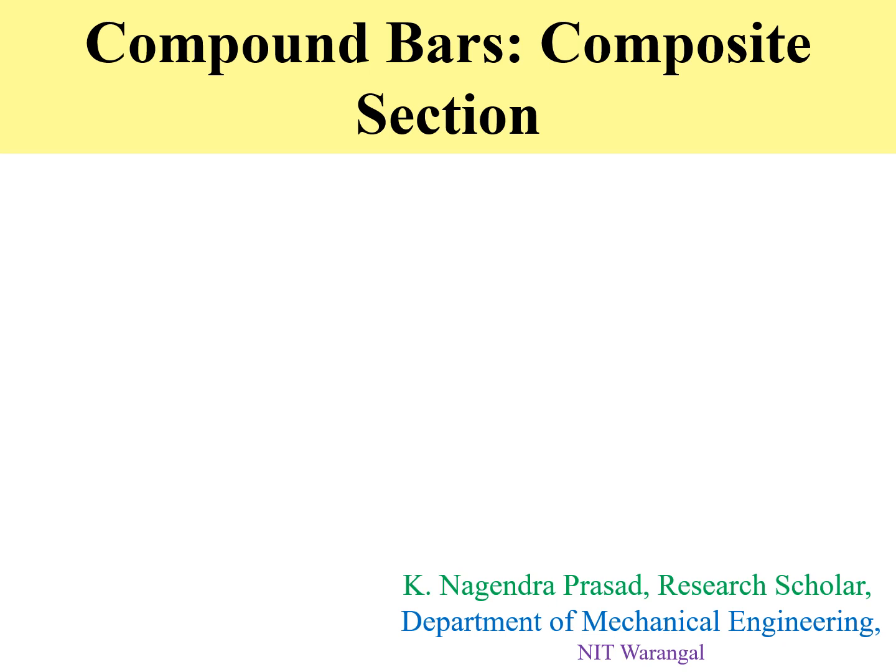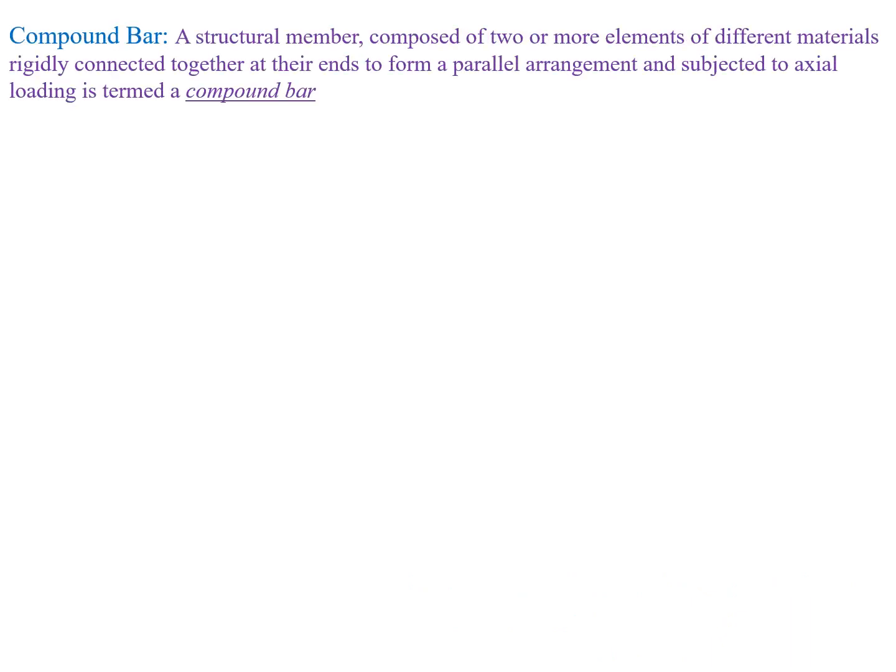Hello everyone. In this lecture, I am going to discuss how to determine stresses and deformation in the composite bar. First we will discuss what is the composite bar. A composite bar is defined as a structural member composed of two or more elements of different materials, rigidly connected together at their ends to form a parallel arrangement and subjected to an axial loading — this is termed as a compound bar.